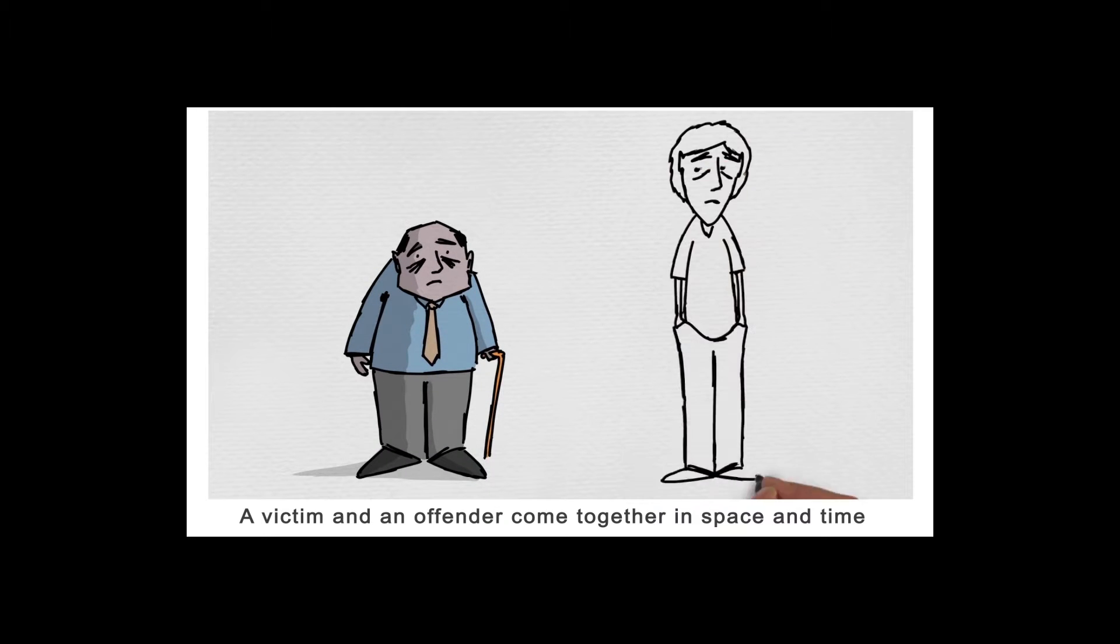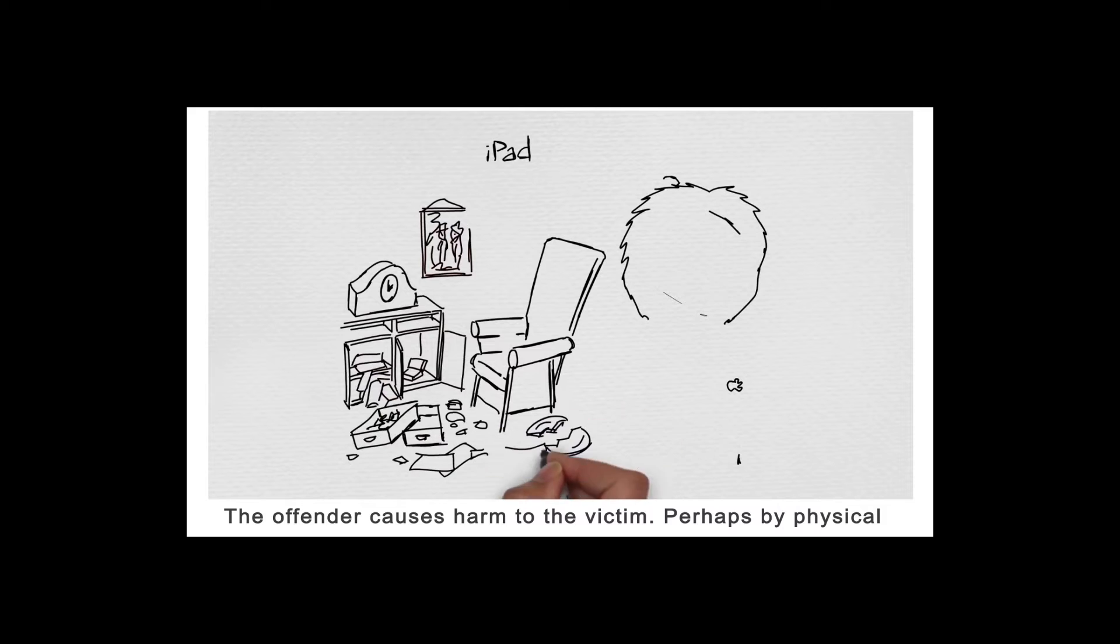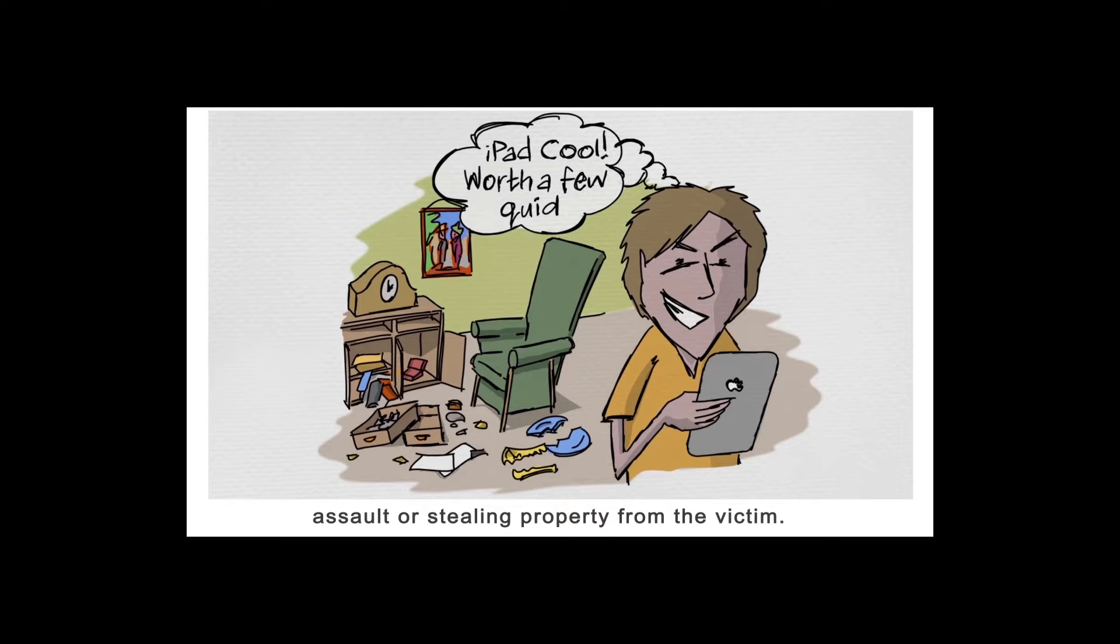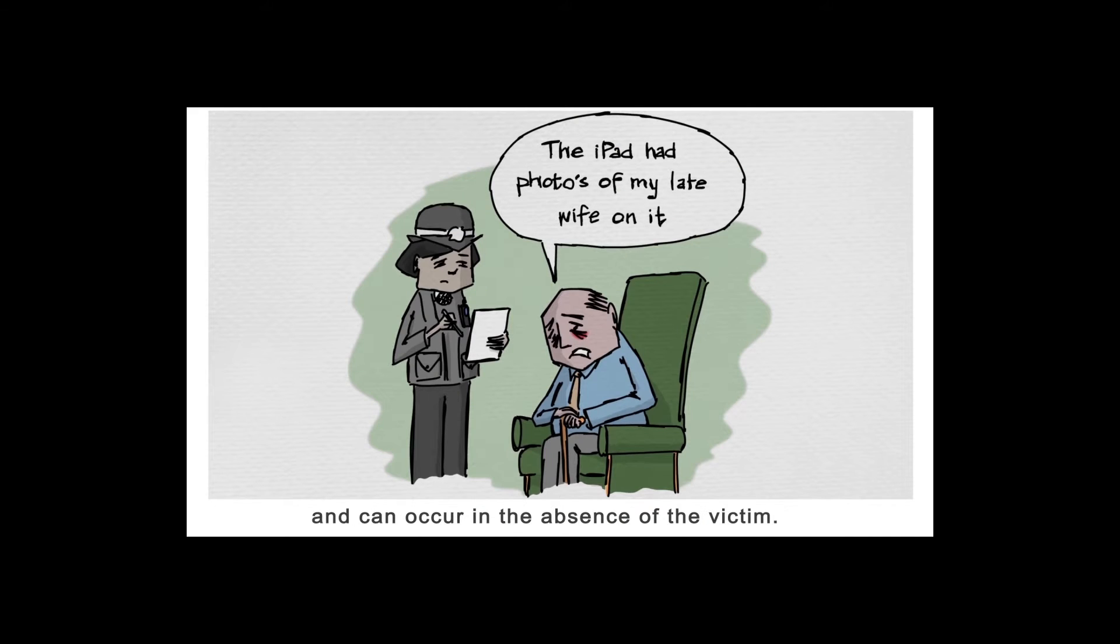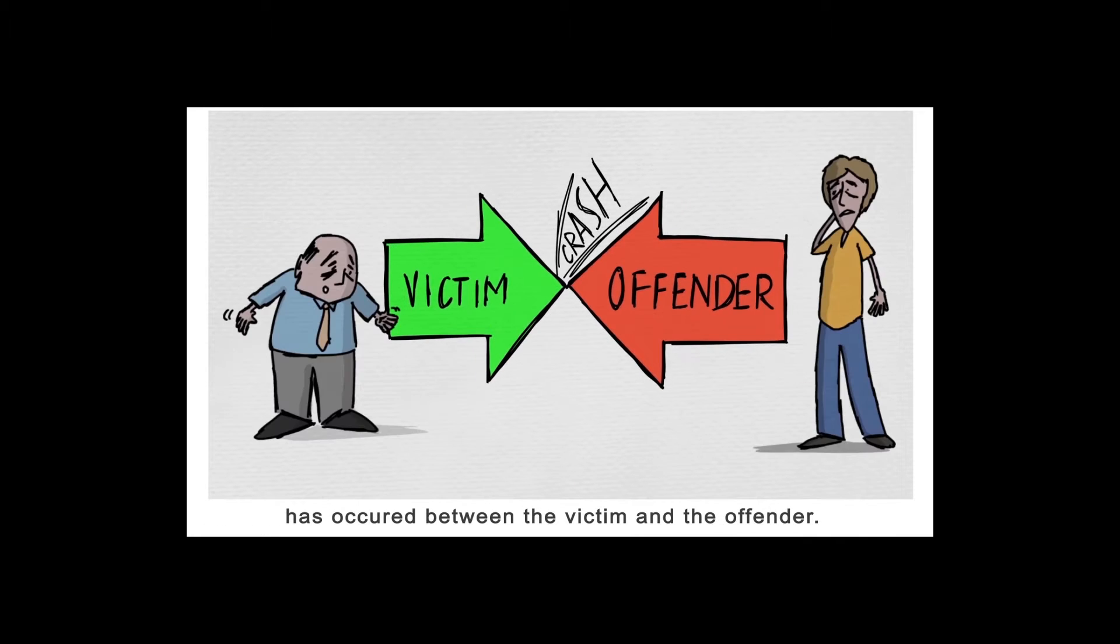A victim and an offender come together in space and time. The offender causes harm to the victim, perhaps by physical assault or stealing property. The harm can include mental or physical abuse and can occur in the victim's absence. Other parties could be affected by the harm caused – family, friends, colleagues. As a consequence of the offender's actions, a conflict and harm has occurred between the victim and the offender.